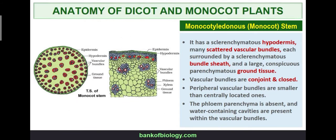In the monocot stem TS, there is an epidermis as the outer layer, then hypodermis just below the epidermis. The vascular bundles have xylem and phloem arranged in a conjoint and closed arrangement — meaning cambium is absent. Ground tissue is present. Compare this with the dicot stem, where cambium is present between xylem and phloem.